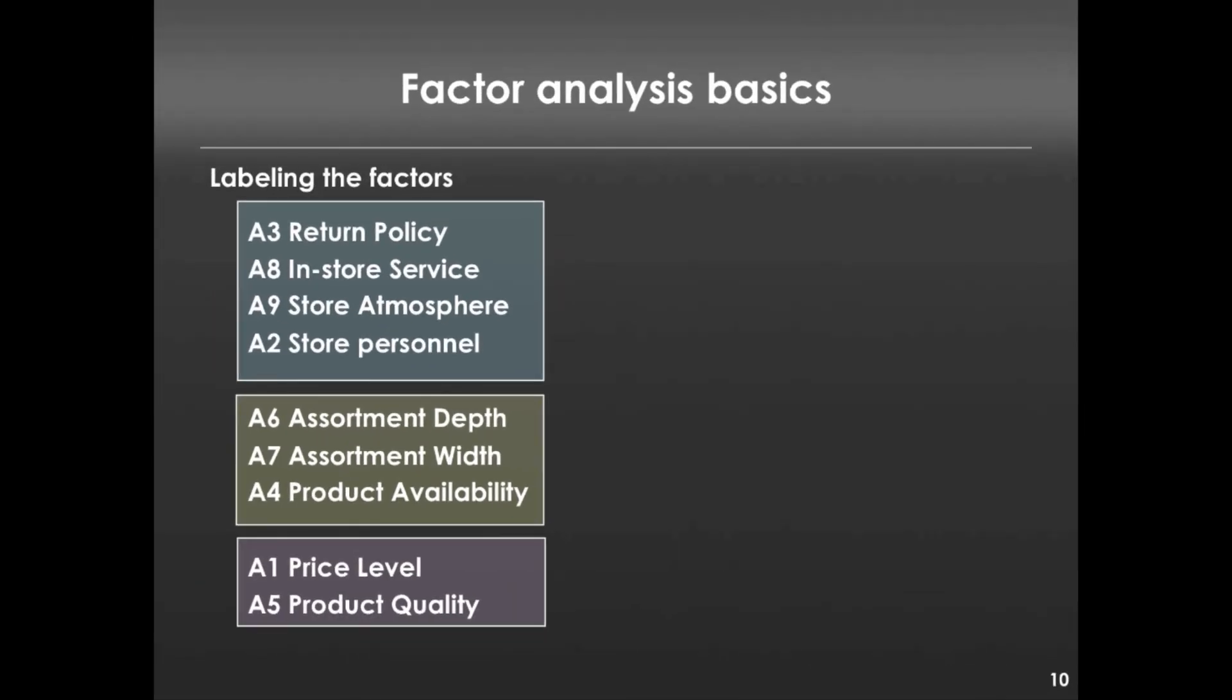Let me put this on a different figure for you, and what we might do is say, what do these factors actually represent? So these four questions, return policy, in-store service, store atmosphere, store personnel, they seem to refer to the in-store experience, whereas assortment depth, assortment width, and product availability seem to be related to something like product offerings. Finally, price level and product quality are related to something like value. Instead of having to think about nine different dimensions that Best Buy customers are evaluating the store on, we now only have to think about three. And if we found that there's some sort of inadequacy in any one of these three, we might be able to act and change that and make our consumers happier.